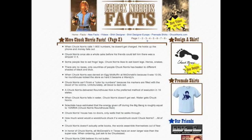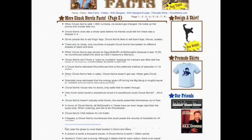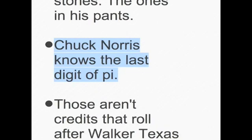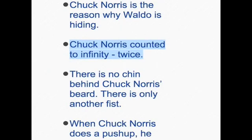So it's pretty much agreed we can't divide by zero — unless, of course, you're Chuck Norris. If you go to the site chucknorrisfacts.com, you'll find that Chuck Norris can divide by zero. And while we're there, we discover that Chuck Norris knows the last digit of pi, and Chuck Norris has counted to infinity twice.